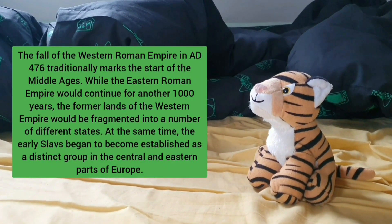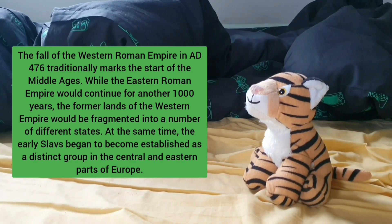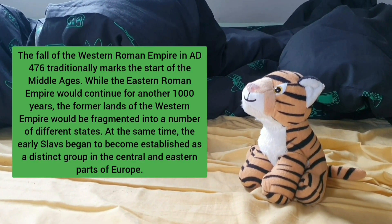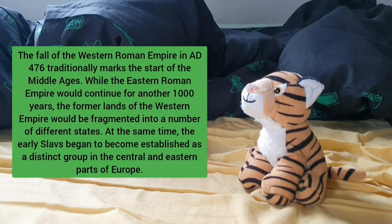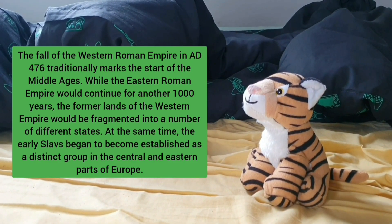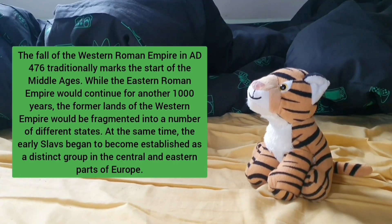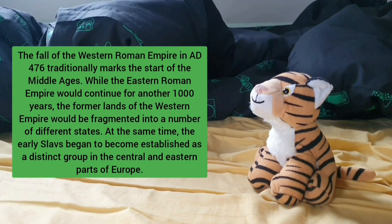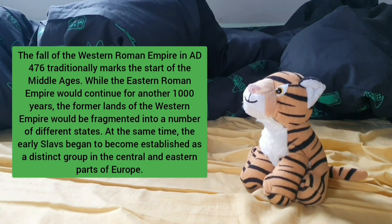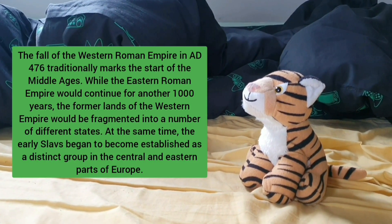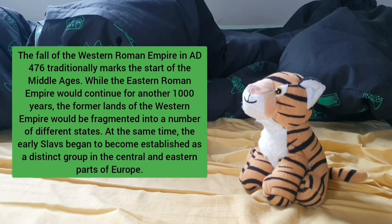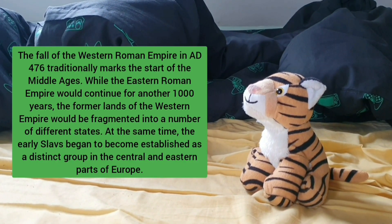The fall of the Western Roman Empire in AD 476 traditionally marks the start of the Middle Ages. While the Eastern Roman Empire would continue for another 1,000 years, the former lands of the Western Empire would be fragmented into a number of different states. At the same time, the early Slavs began to become established as a distinct group in the central and eastern parts of Europe.